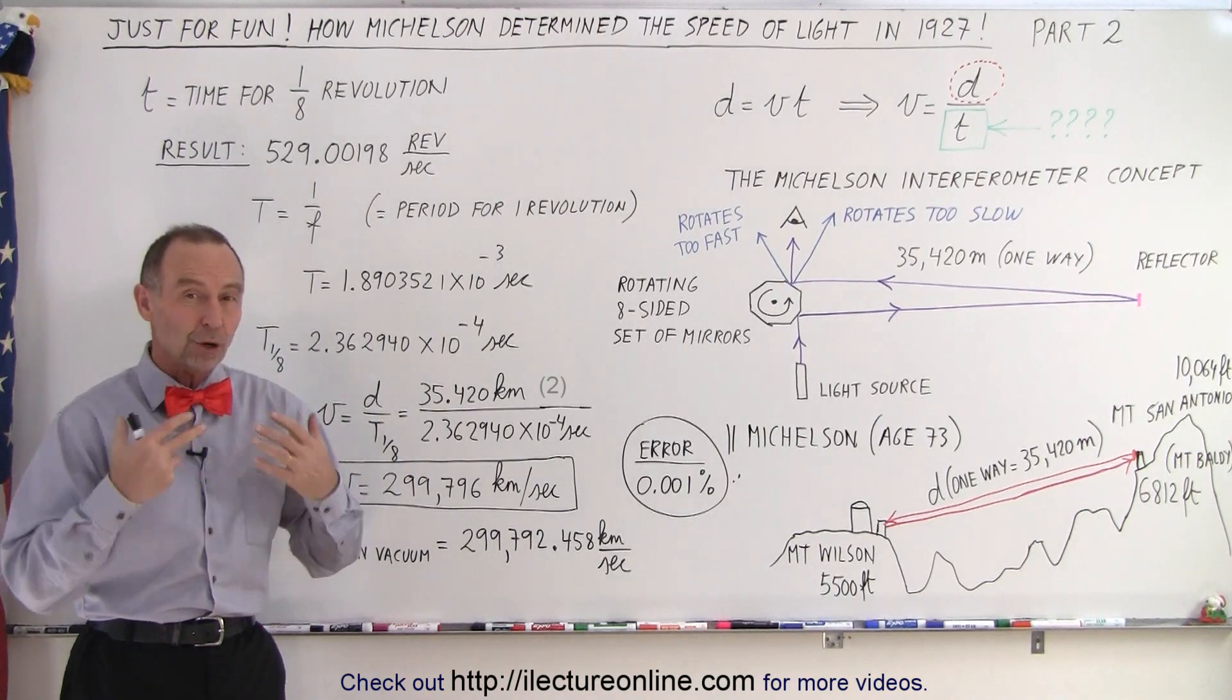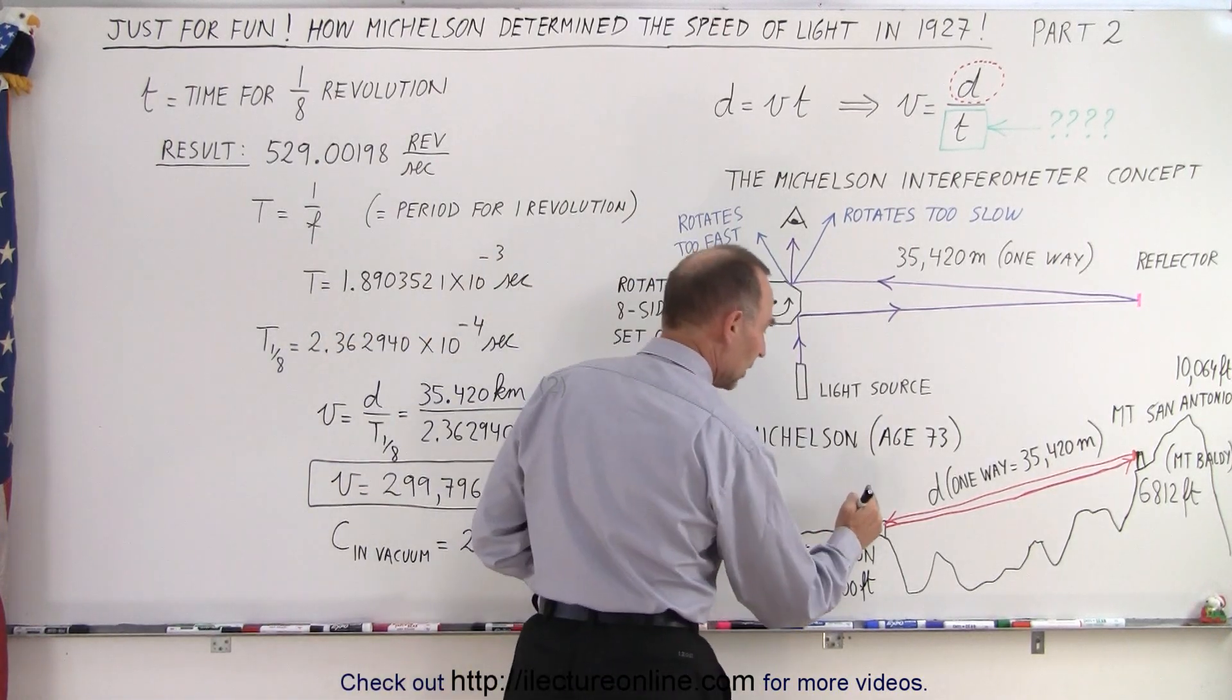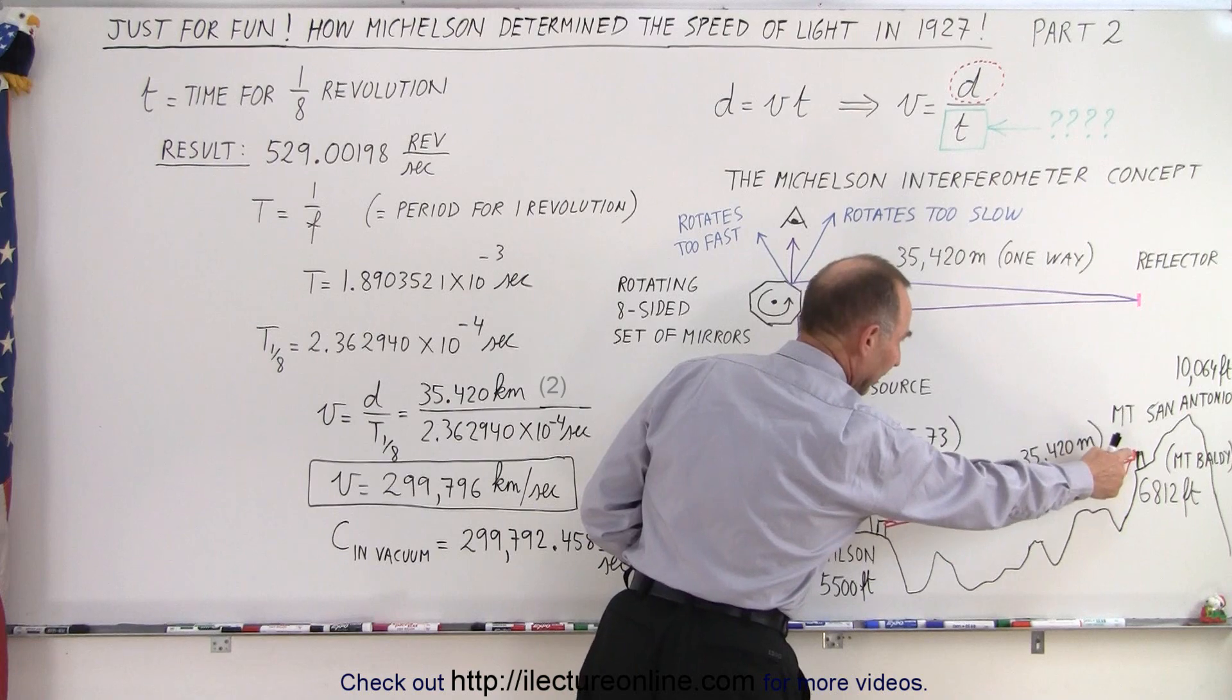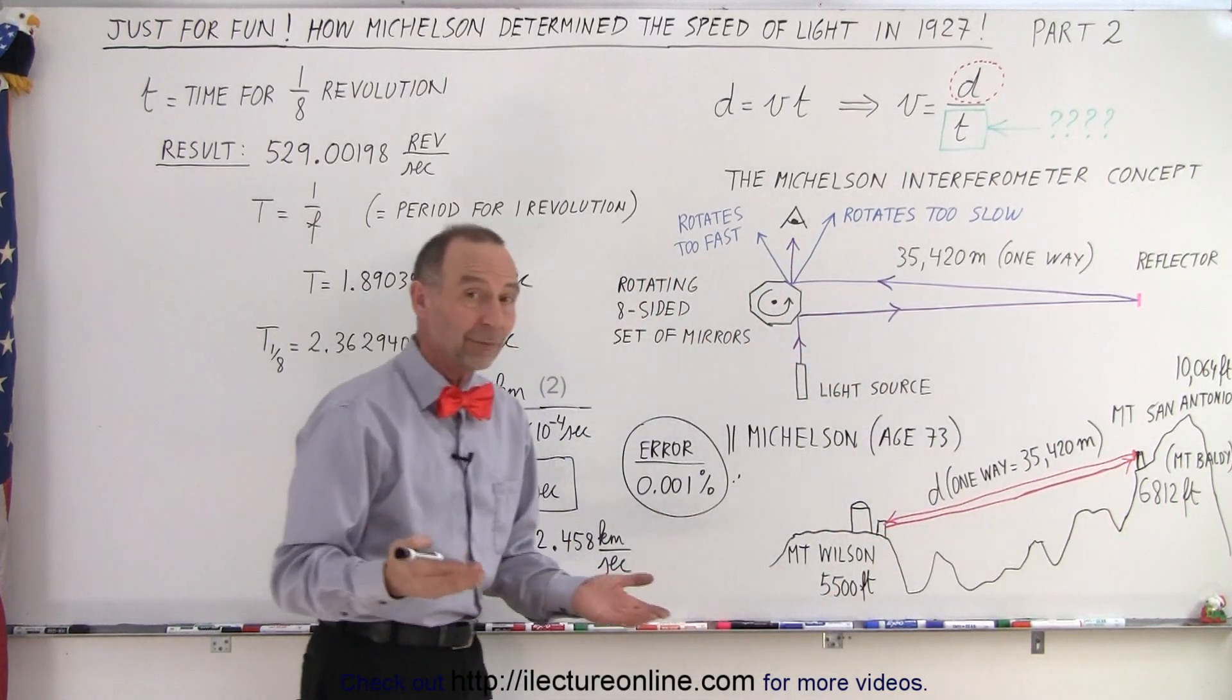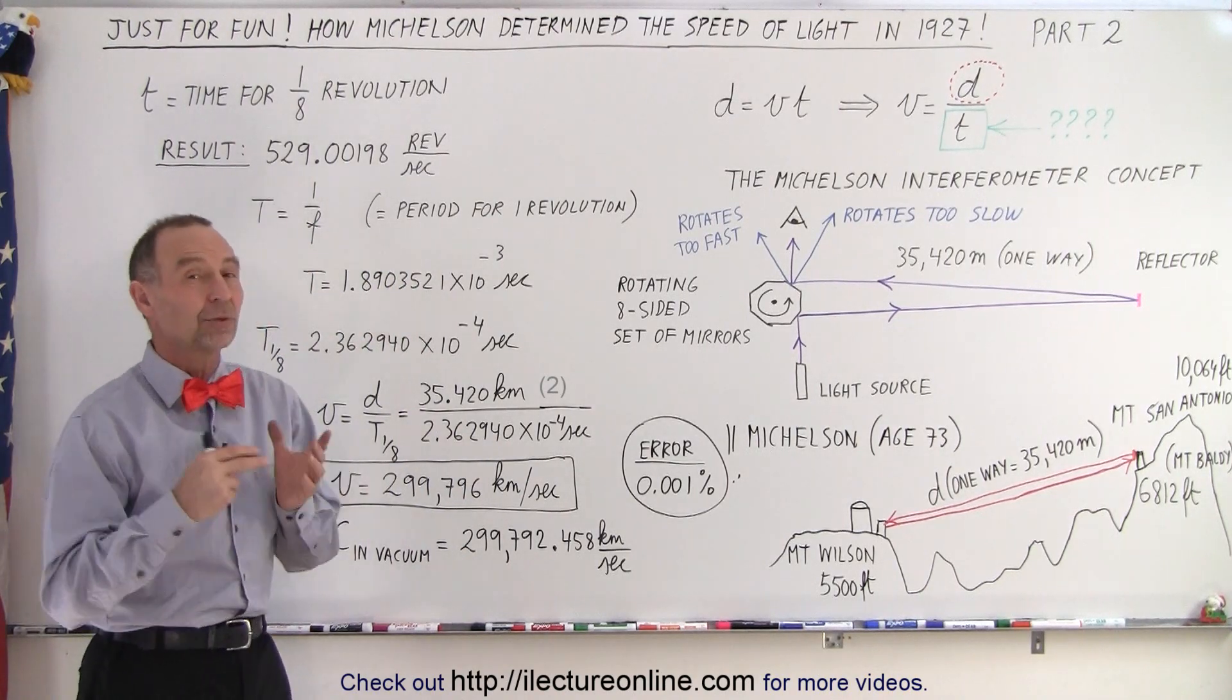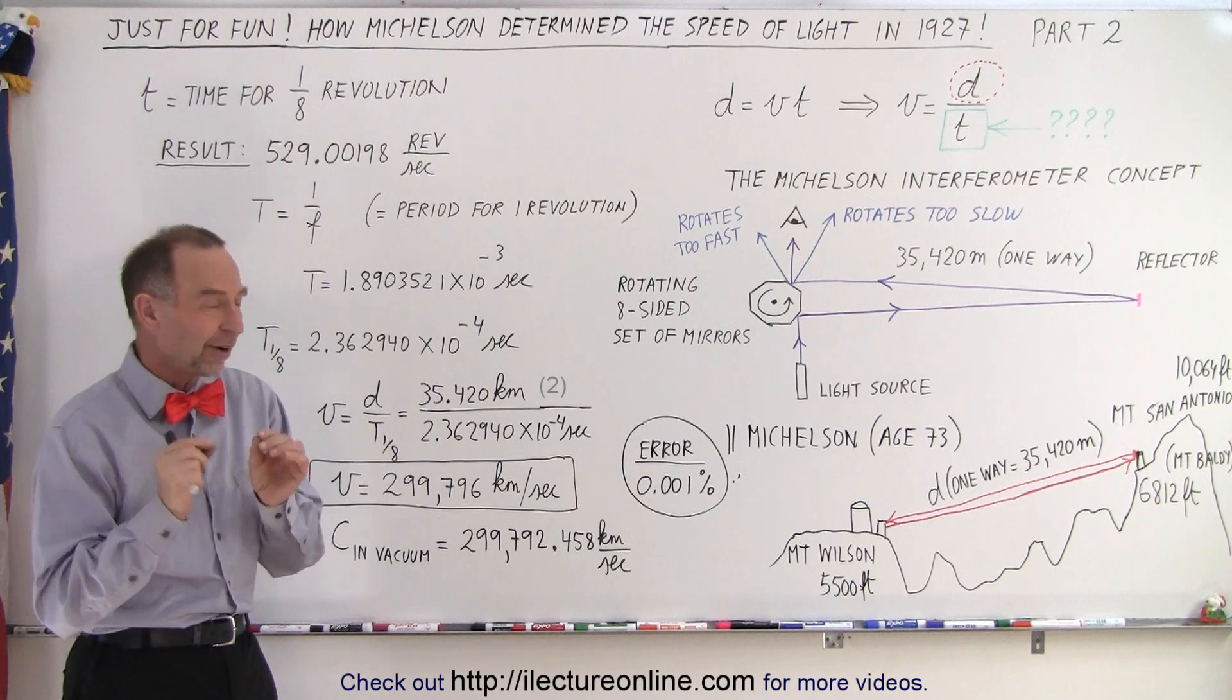They tried to determine the distance precisely between the source of light on top of Mount Wilson to the reflector, and of course multiply times two to get back. They were within about 10 centimeters of the actual distance, at least so they thought when they measured it. They were very accurate.